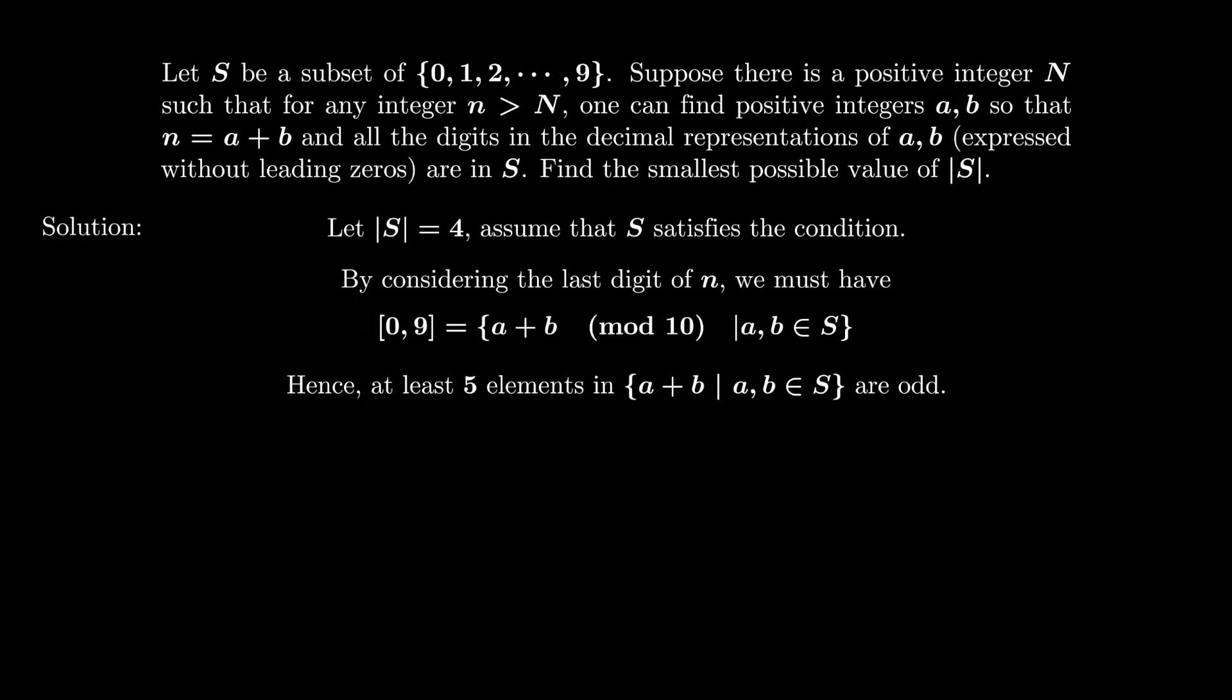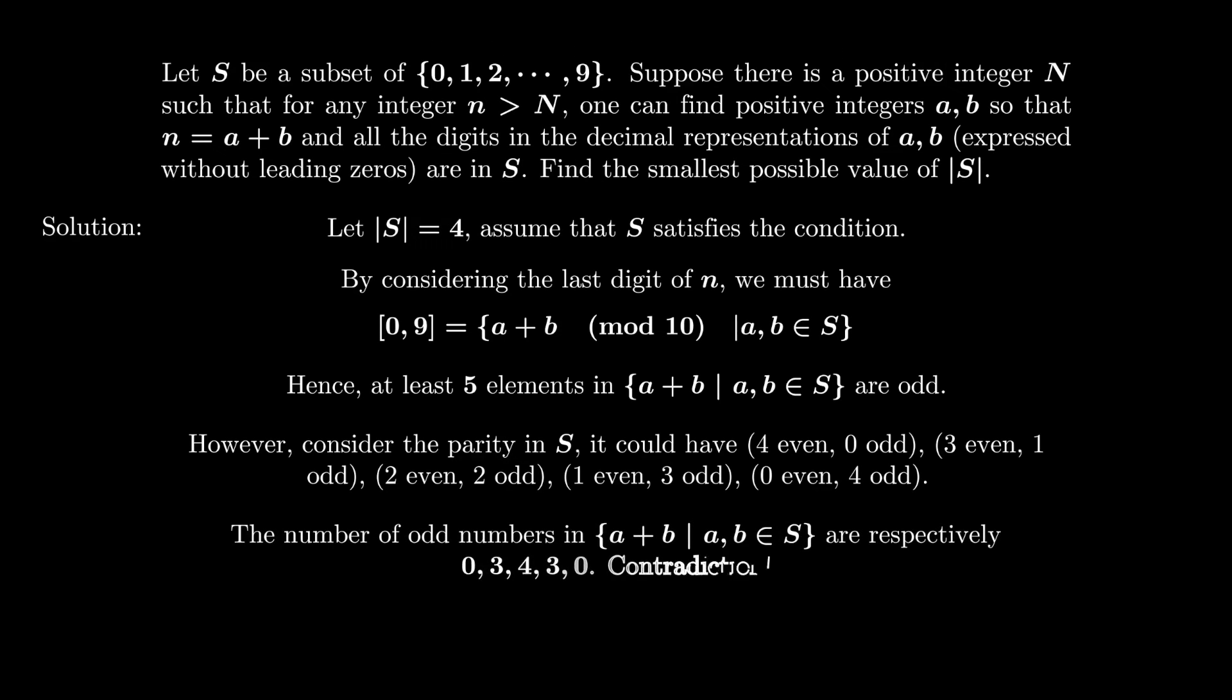This means at least five elements in the set a+b must be odd numbers. Now, if we consider the parity of elements in S, it could have (4 even, 0 odd), (3 even, 1 odd), (2 even, 2 odd), (1 even, 3 odd), or (0 even, 4 odd). But none of these possibilities give five odd numbers in the sum a+b.